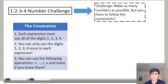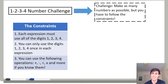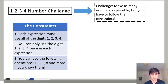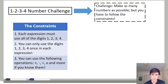We've got a number challenge for you today. This is great because it's a game you can play by yourself or with other people. Here's the challenge: you need to make as many numbers as possible, but you have to follow the constraints. Constraints are like rules. You're going to make expressions, and each expression must use all the digits: one, two, three, four.